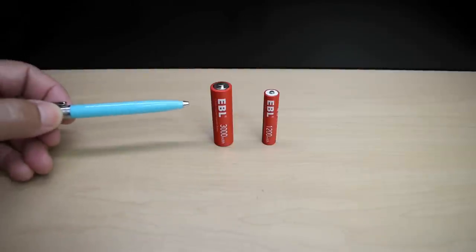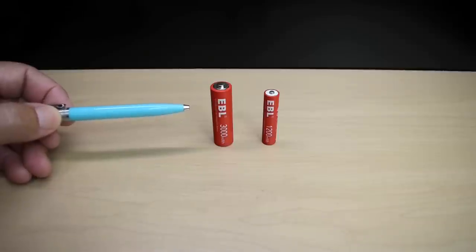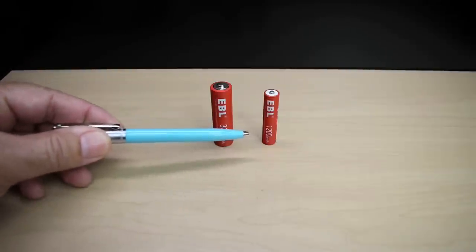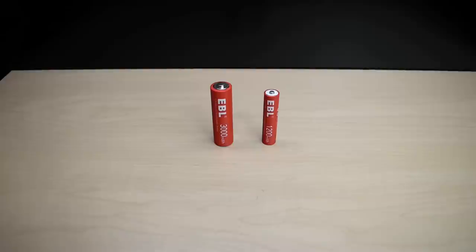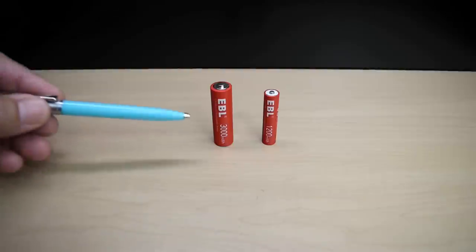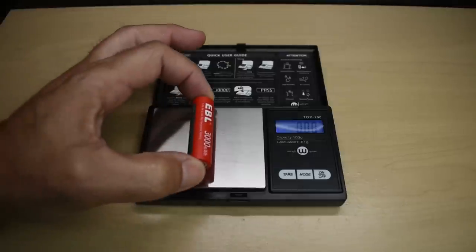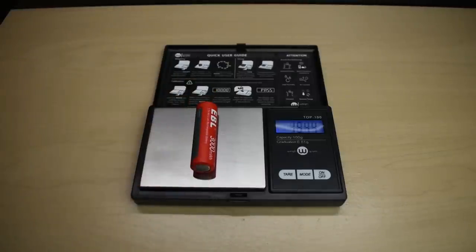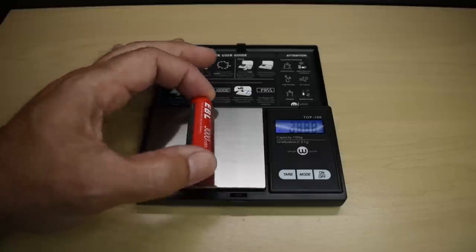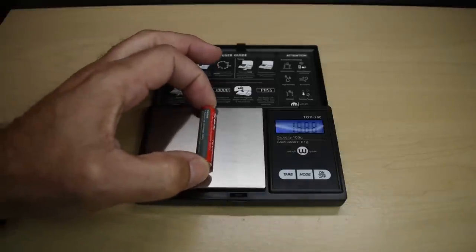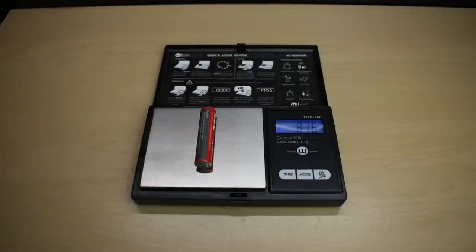A typical AA Energizer or Duracell battery has a weight between 23 and 24 grams and for a AAA it's between 11 and 11.5 grams. Let's weigh these to see how it compares. The AA comes in just under 19.5 grams, so 4 or 5 grams lighter than an alkaline. And for the AAA about 8.75 grams, that's about 2 or 3 grams less than the Energizer and Duracell AAA.